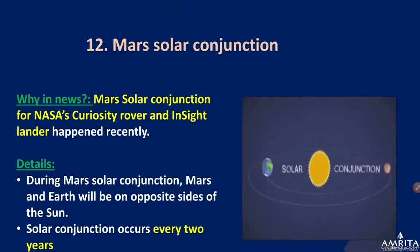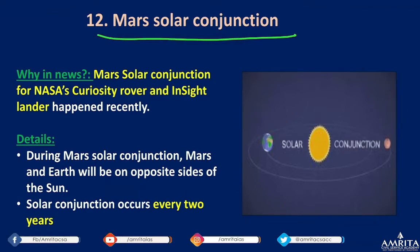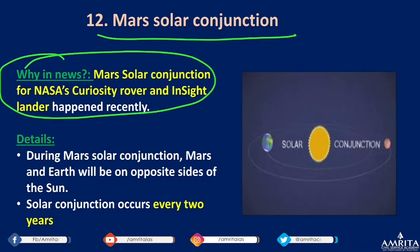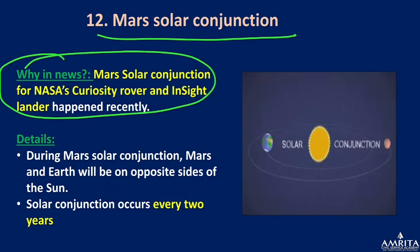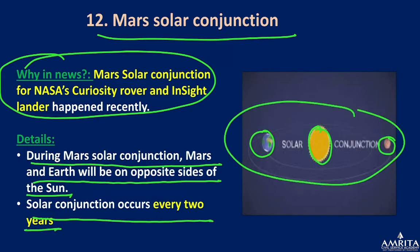Mars Solar Conjunction: This was in the news for NASA's Curiosity Rover. During Mars solar conjunction, Mars and Earth are on opposite sides of the Sun. This phenomenon occurs every two years, during which communication between Earth and Mars spacecraft becomes severely limited.